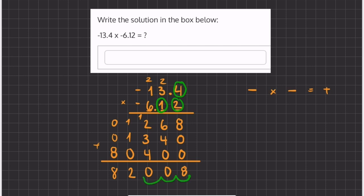And we're going to make sure that our final answer is a positive number, not a negative, because we've multiplied by two negative numbers. So our final answer is going to be 82.008.